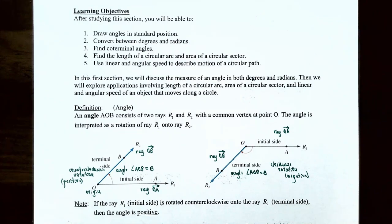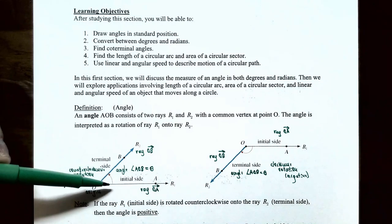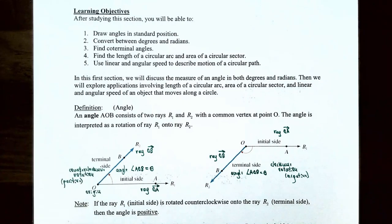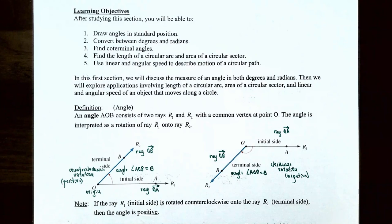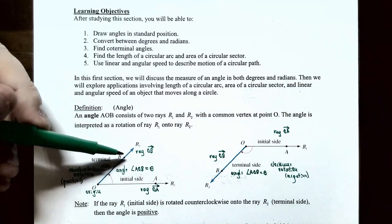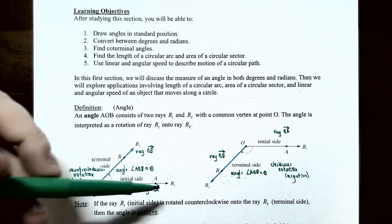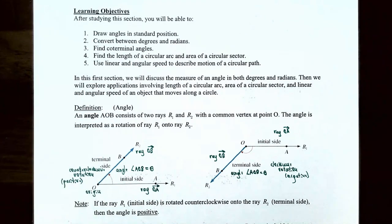The ray OA is called the initial side or ray R sub 1. This initial side is going to rotate counterclockwise or clockwise onto a different ray which is called R sub 2, and that's called the terminal side, which is the ray OB. So you have the angle BOA or angle AOB for the initial side to rotate into the terminal side.